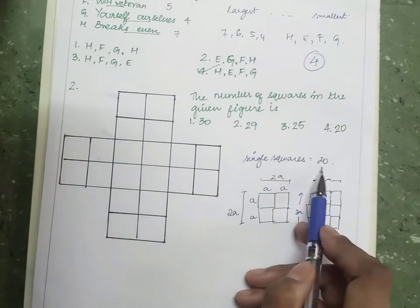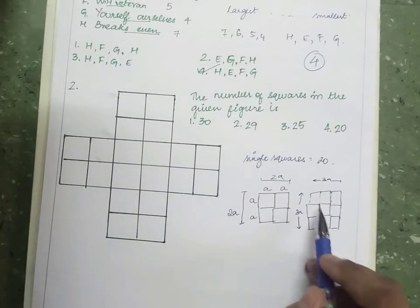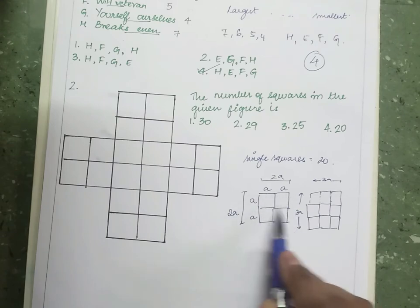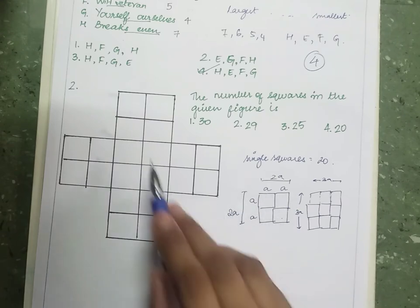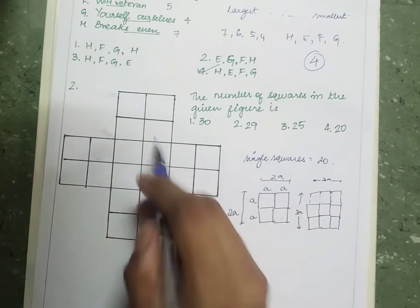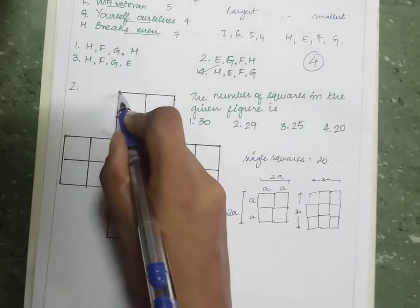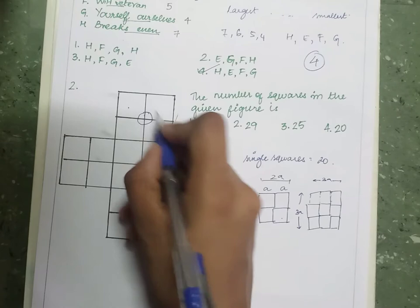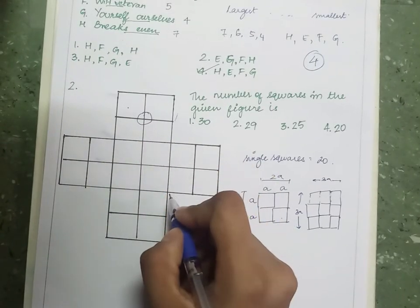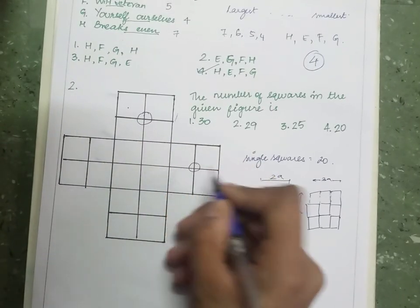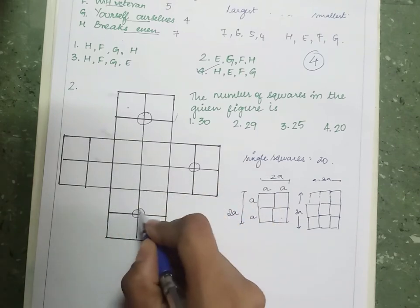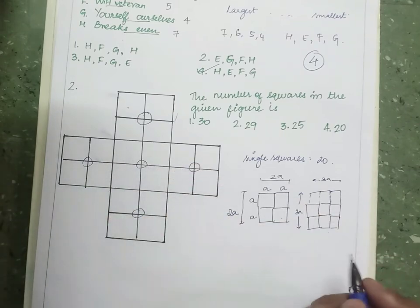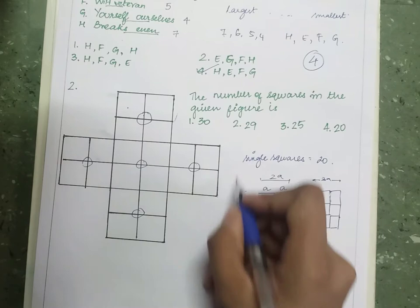We have single squares equal to 20. We don't see any 3a × 3a formation here, so we are limited to 2×2 square formations. Counting: this group of four makes one square, these four make another, these four make another, these four make another, and the center four make one more. So 2×2 squares equal 5.